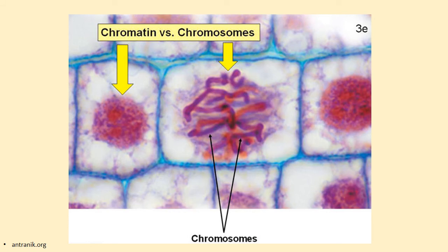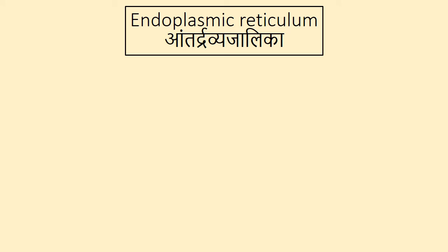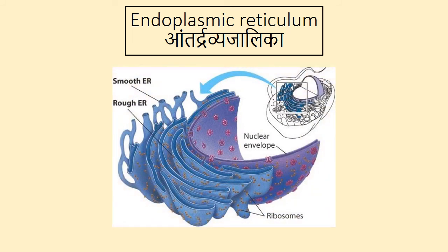Now let's talk about one more structure just next to the nucleus: the Endoplasmic Reticulum, or Antardravya Jalika. Endoplasmic reticulum is present in all eukaryotic cells. It has interconnected small tubes filled with fluid. There are two types: one is smooth, and another has ribosomes on it, making it look rough — that's why it is called rough endoplasmic reticulum. It supports cell structure and plays a major role in synthesis, folding, modifying, and transporting various proteins.